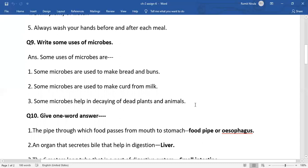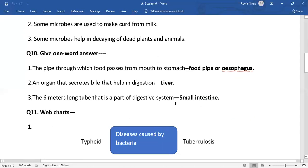Now one word answers: The pipe through which food passes from mouth to stomach, that is called food pipe or esophagus. Number two, an organ that secretes bile that helps in digestion: liver.